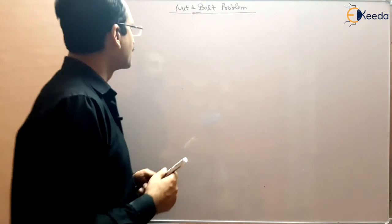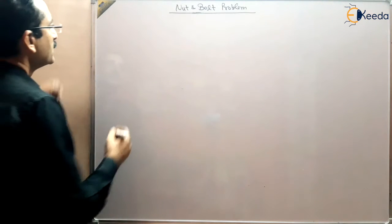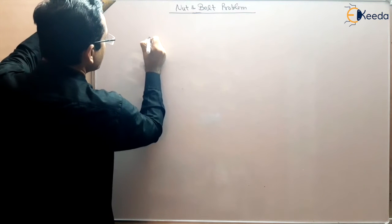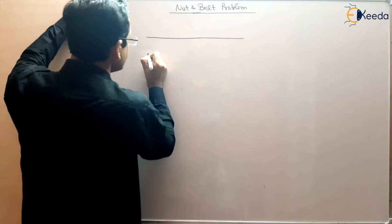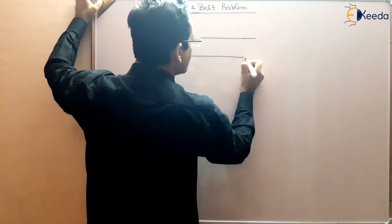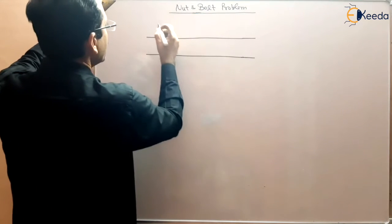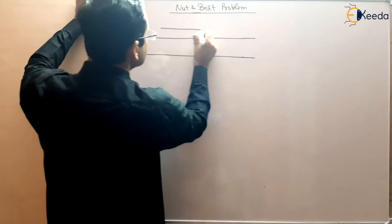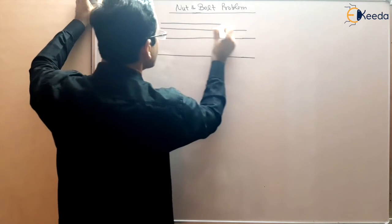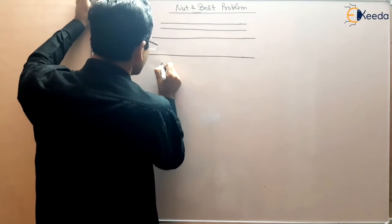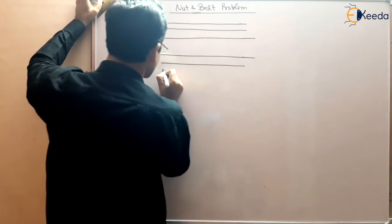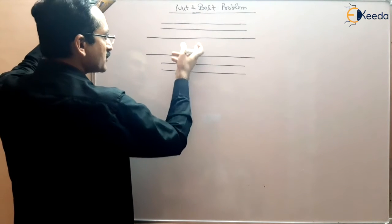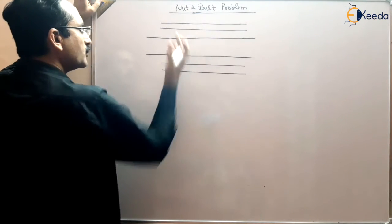Let us draw the diagram we are going to discuss — the nut and bolt diagram. Suppose this is our bolt, and it is surrounded by a tube. A tube is given to us, which has some internal diameter and external diameter. The bolt is generally of steel and the tube is generally of copper, but it may be any material.